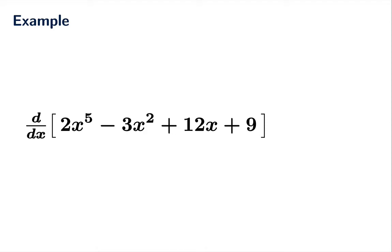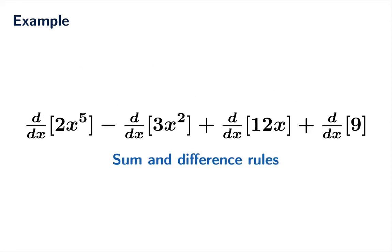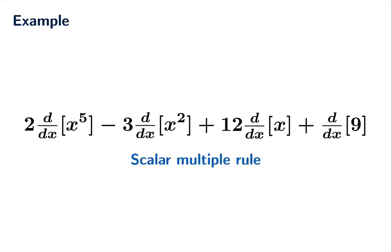So the sum and difference rules tell us that we can actually, if you think about it as distribution, you can sort of distribute the differentiation process across all the terms. The derivative of a sum of four terms is the sum of the derivative of those four terms. Now those first three terms all have scalar multiples on the inside, so the scalar multiple rule says we should be able to slide those out. Now what's left is simply a bunch of power function derivatives that we need to evaluate.